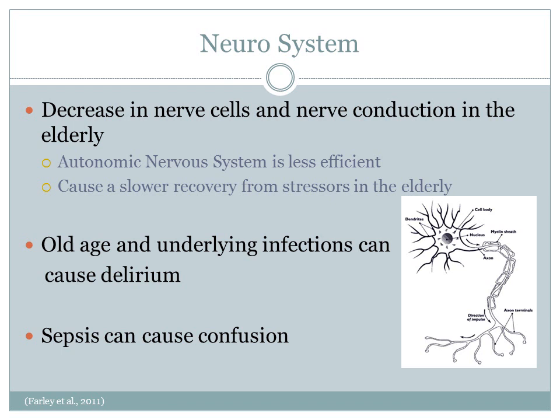In the healthy aging individual, the brain continues to function normally; however, there is a decrease in nerve cell production and conduction in the elderly. The autonomic nervous system is less efficient and leads to a slower recovery from stressors, such as sepsis. Old age and underlying infections can cause delirium. After the age of 65, individuals are at a higher risk for developing delirium once hospitalized. Sepsis can also lead to delirium and confusion due to the possible buildup of cerebral toxins, direct neural disruption, hypotension, and decreased cardiac output due to disruption of intracerebral blood flow.